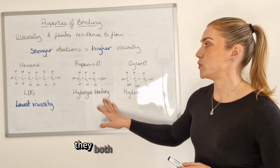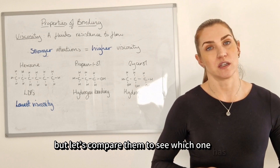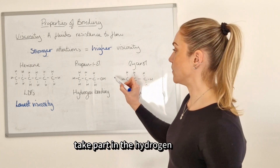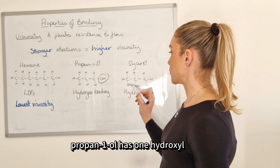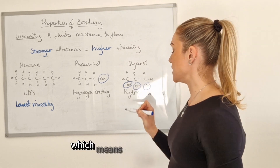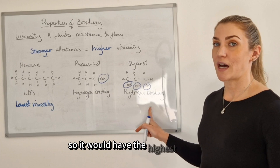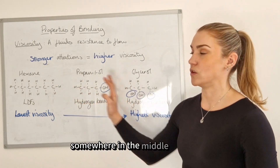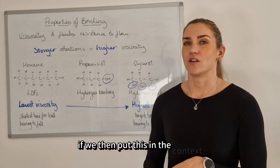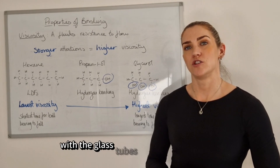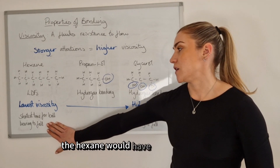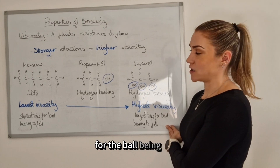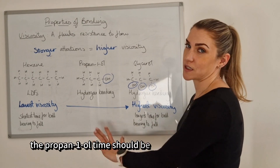For propan-1-ol and glycerol, both have hydrogen bonding — but glycerol has three hydroxyl groups compared to propan-1-ol's one, meaning glycerol has stronger hydrogen bonding and therefore the highest viscosity. Propan-1-ol would have a viscosity somewhere in the middle. In the context of the experiment, hexane would have the shortest time for the ball bearing to fall, glycerol the longest, and propan-1-ol somewhere in between.